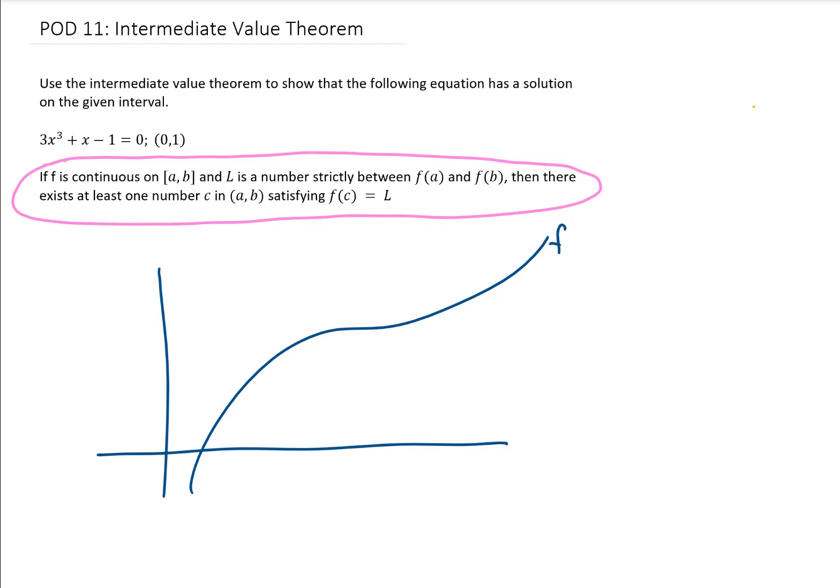You have a function f, and it is continuous. You have an x value here that is a, and an x value here that is b. Therefore, you have a y value here that we call f(a), and we have a y value here that we call f(b).